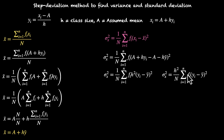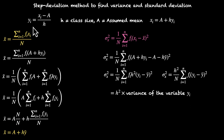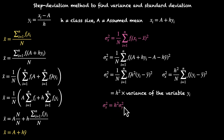Now if we take a close look at this, Σ fi·(yi − ȳ)² / n is exactly the same as σx² but instead of xi we have yi and instead of x̄ we have ȳ. This means this is the variance of y. So variance of x = h² × variance of y. This is how we calculate the variance using this method — we find the variance in terms of the new variable yi and then multiply that by h². We can write this as σx² = h²·σy².